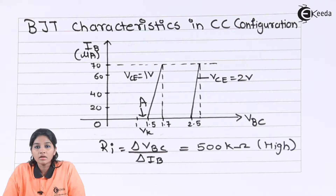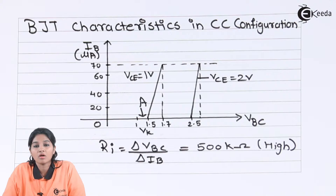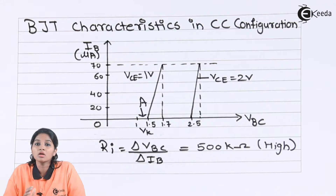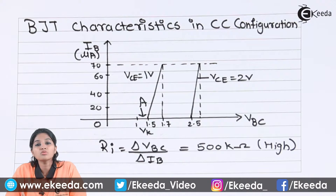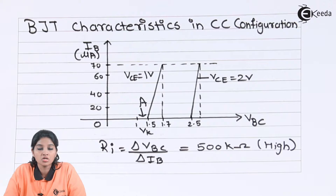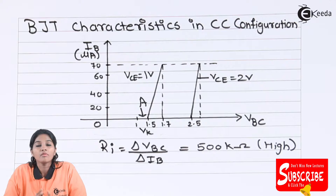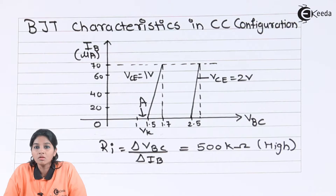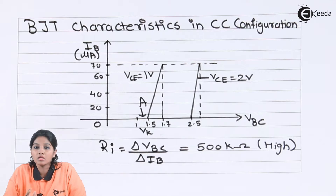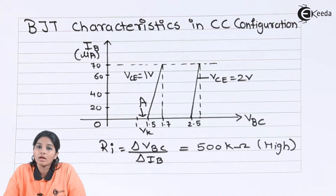We know that the current gain — alpha and beta — provides some information about the behavior of a transistor. But the information provided by alpha and beta is not enough to understand its behavior in detail. Therefore, we need to consider various curves which provide a relationship between input and output current and voltage. These curves are called the characteristics of a bipolar junction transistor. There are two types of characteristics: input and output characteristics. Input characteristics provide a relationship between input current and input voltage, whereas output characteristics provide a relationship between output current and output voltage.